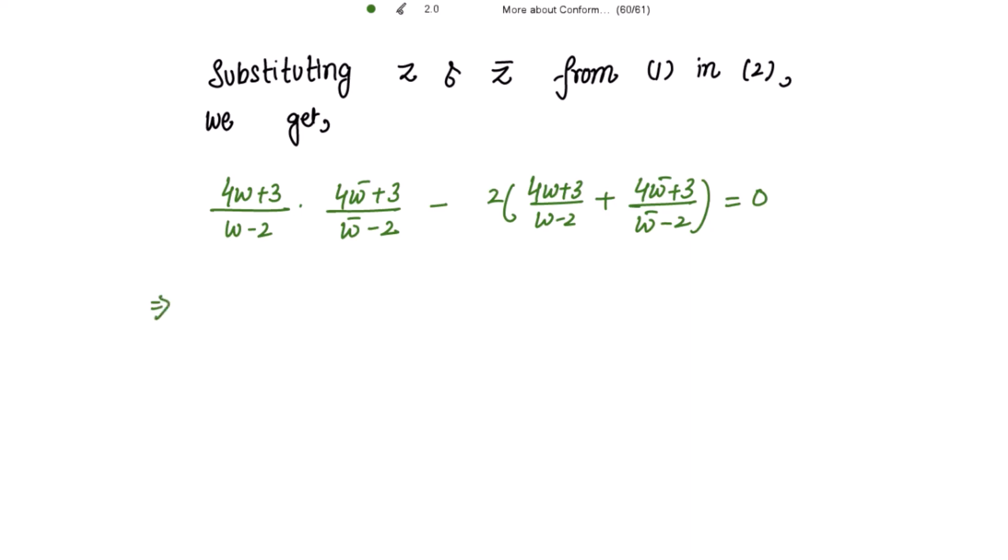On solving this, we multiply these two terms. So we get 16ww̄ plus 12w plus 12w̄ plus 9, minus, taking the LCM and writing 2 outside, we get 4w̄ plus 8w plus 3w̄ minus 6, and then plus 4w̄ plus 3w minus 8w̄ minus 6 equals 0. The denominator goes to the other side. This implies 16ww̄, and in this bracket we get 4 plus 4, that is 8ww̄ multiplied with minus 2, that is minus 16ww̄, so this cancels.